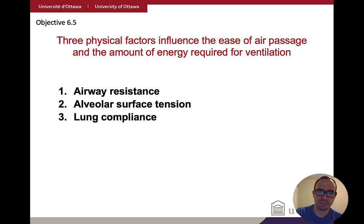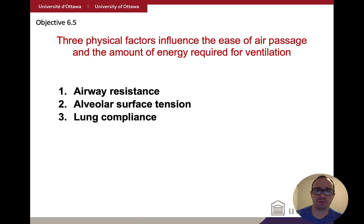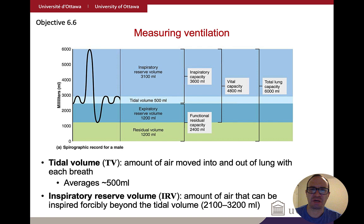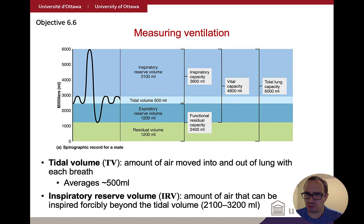We talked about three different features that impact airflow into the lungs: airway resistance, alveolar surface tension, and lung compliance. We also talked about how we can measure ventilation and all these different volumes. For example, tidal volume is about 500 mL — the amount that goes in and out of your lungs under normal circumstances. But if we force the situation by breathing out really hard or breathing in with a lot of effort, we can increase the amount of air going either in or out.